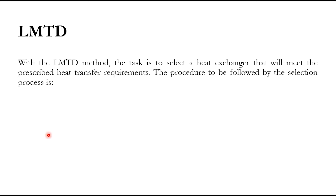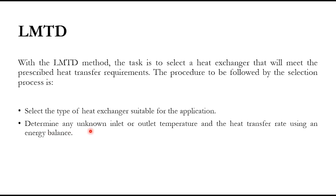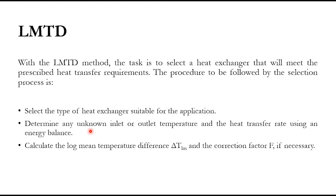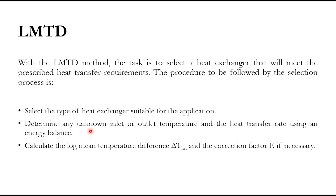With the LMTD method, our task is to select the heat exchanger that will meet the prescribed heat transfer requirement. The procedure is: (1) select the type of heat exchanger suitable for the application; (2) determine any unknown inlet or outlet temperature using energy balance — as seen in the geothermal water example where we computed the unknown outlet temperature; (3) calculate the log mean temperature difference using ΔT_1 minus ΔT_2 over ln(ΔT_1/ΔT_2), and the correction factor F for cross-flow heat exchangers, where we computed P and R from the graph.